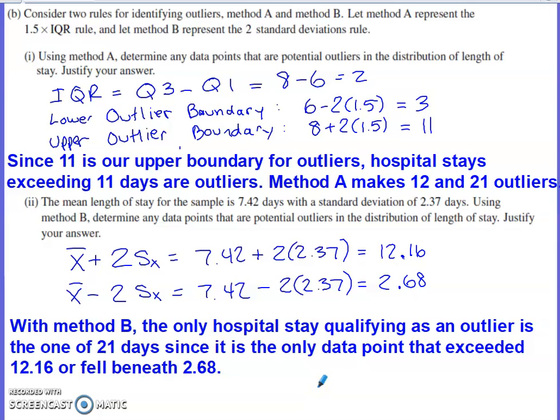The second part of part B says the mean length of stay for the sample is 7.42 days. Standard deviation is 2.37. Using method B, determine if there are any potential data points that are outliers for the length of stay. Justify your answer. So I would go up by two standard deviations from the mean, I would go down by two standard deviations from the mean. That gives me an upper boundary of 12.16 and a lower boundary of 2.68.